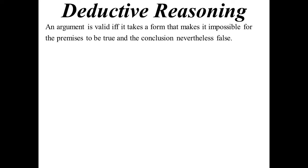Now, it's going to be valid if, and only if, it takes a form where it's impossible for all the premises to be true and then the conclusion be false. If that situation is impossible, then we must have a proof — it must be a solid proof.